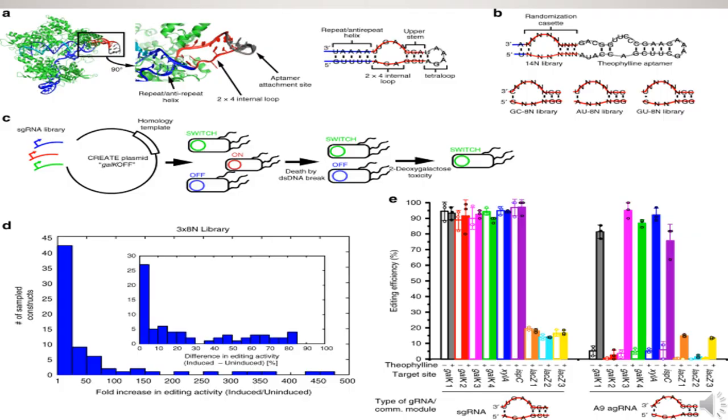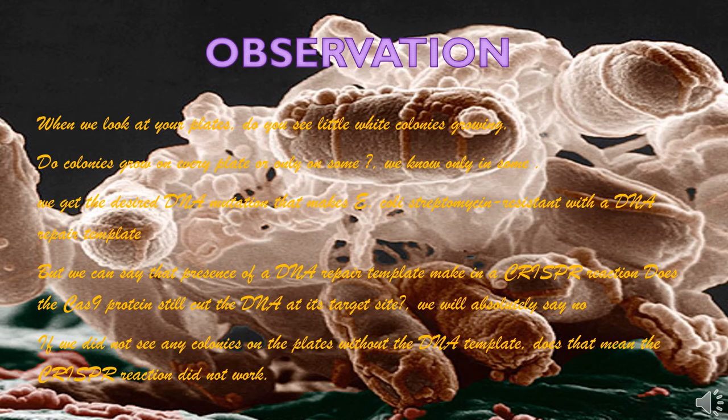This is the pictorial representation of the procedure. Now we will analyze and interpret our results. When we look at the plates, do we see white colonies growing? Do colonies grow on every plate or only on some? We know only on some. If we did not see any colonies on the plates without the DNA template, does that mean the CRISPR reaction did not work? The presence of a DNA repair template plays a key role — but does the Cas9 protein still cut the DNA at its target site?